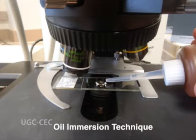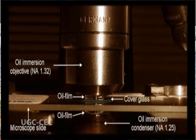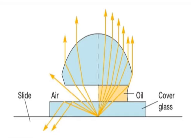The resolving power of a microscope is a function of the wavelength used and the numerical aperture of the lens system. In light microscopy, oil immersion is a technique used to increase the resolving power. This is achieved by immersing both the objective lens and the specimen in a transparent oil of high refractive index, thereby increasing the numerical aperture of the objective lens. The exact physical property of the medium through which light passes determines the amount of diffraction. With non-immersion or dry objectives, there is an air gap between the front lens of the objective and the top surface of the cover slip.